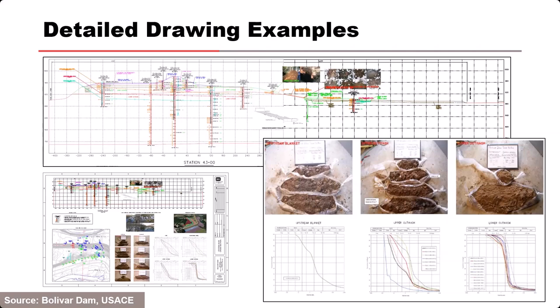Other conditions needed for backward erosion piping include a stable roof, sufficient gradient at the exit and along the entire pathway for the pipe to progress.